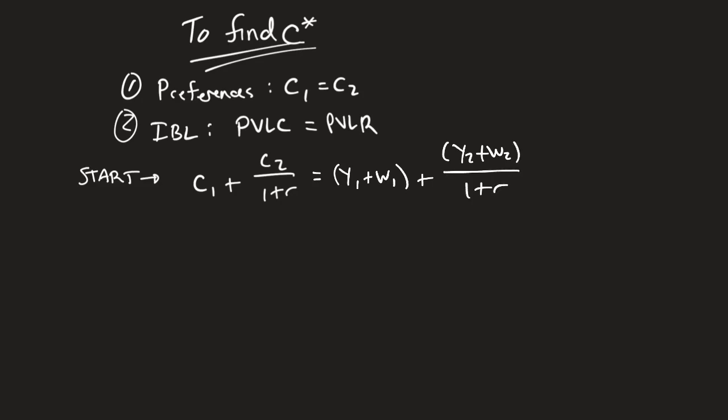So the first thing, we always start with that IBL equation. And then what we're going to do is we are going to take this and we are going to plug it in. C2 can just become C1. We're taking two equations with two unknowns and we're solving for it. So we end up having C1.